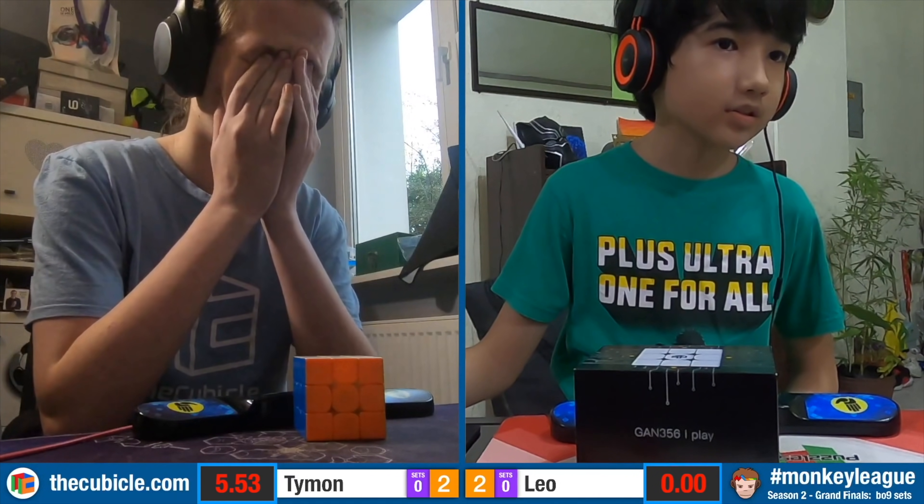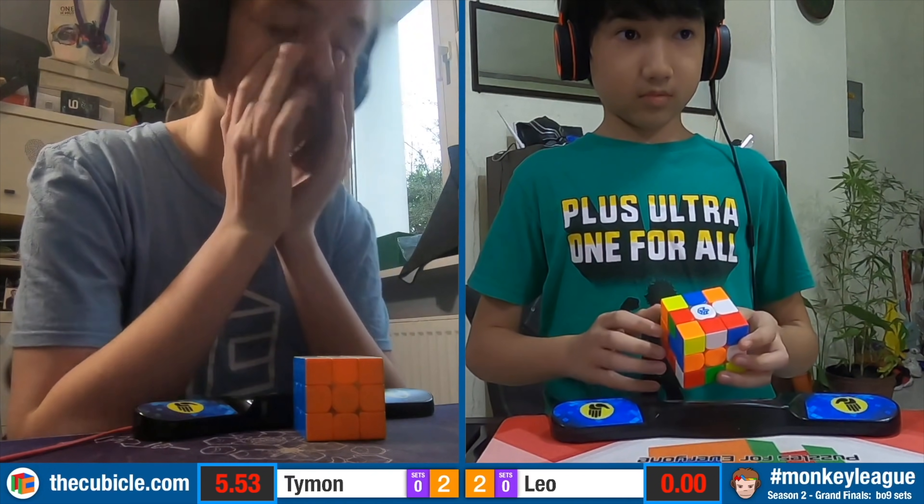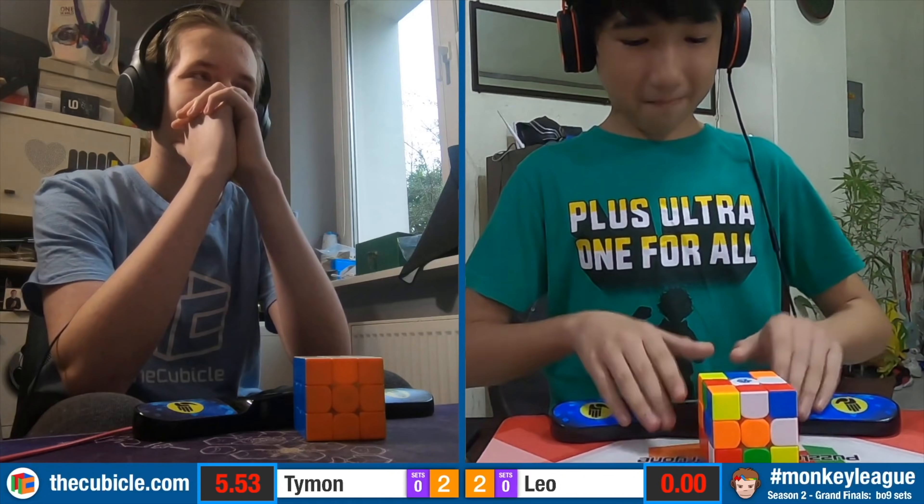The lockups on the T-Perm. That F2L and OLL was amazing. And he locked up so much going into that PLL transition, but it's still a 5.53 and Leo is laughing at this scramble.